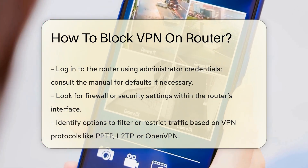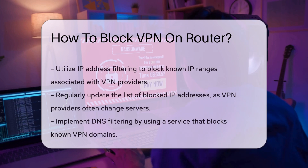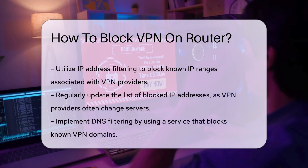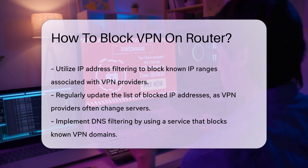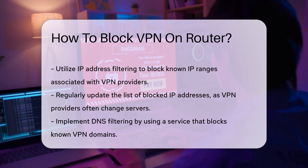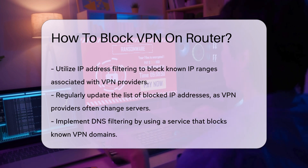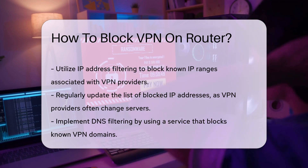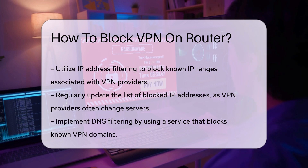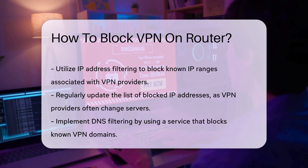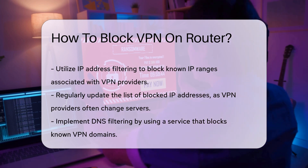Another effective method is to use IP address filtering. Many VPN providers have known IP ranges. By blocking these IP addresses, you can prevent VPN connections. Regularly updating this list is crucial, as VPN providers frequently change their servers.